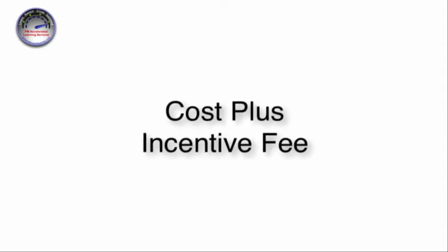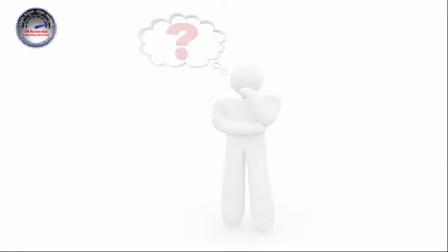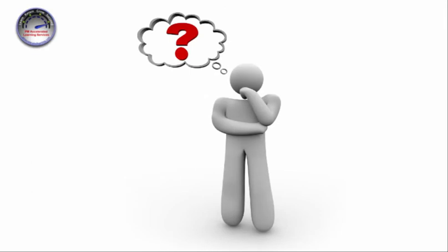Our attention today will be on a cost plus incentive fee contract. If you do see a procurement calculation it will likely be a cost plus incentive fee contract, as this has the most steps and is therefore considered to be the most arduous to calculate. Also, since we are not likely to see procurement calculations on the exam, our preference is to work through the problem in as little as four steps to solve it, in lieu of memorizing a formula.